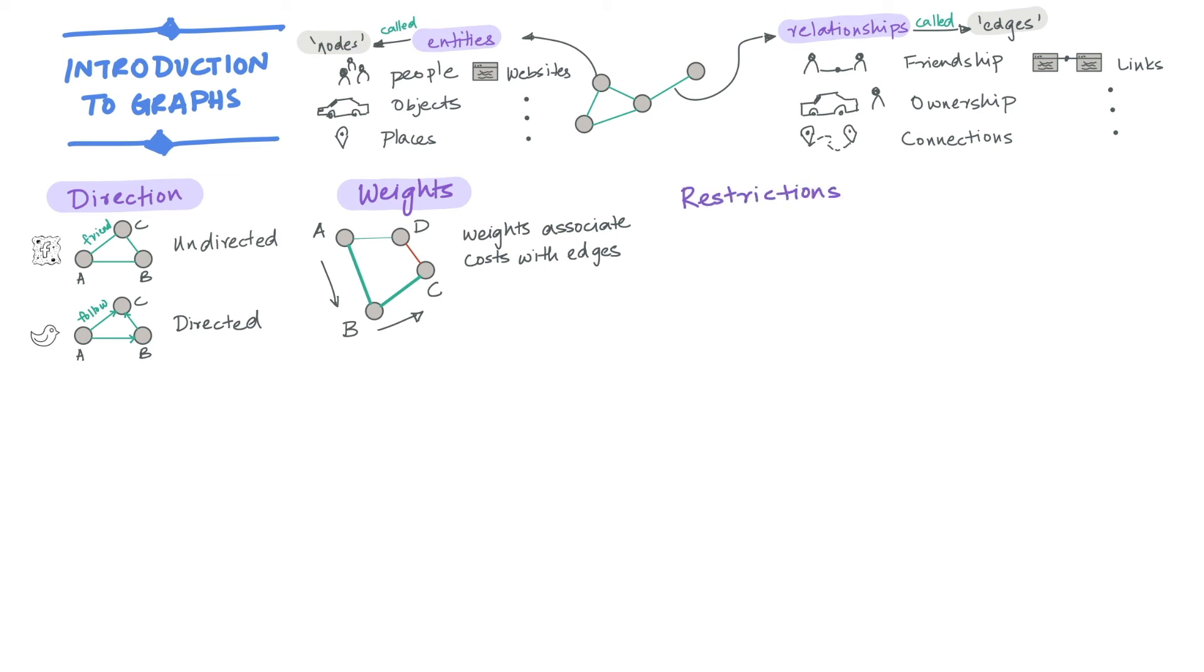Next, let's look at restrictions using the same example. Let's say that the city B is no longer accepting incoming traffic while the road from B to C has been closed off. This would mean that our earlier solution for getting from A to C via B is no longer possible.